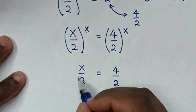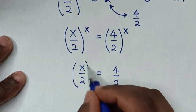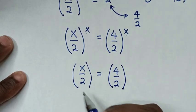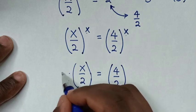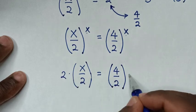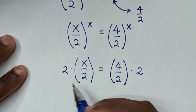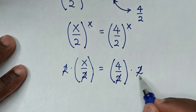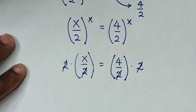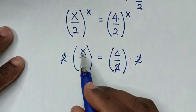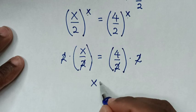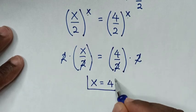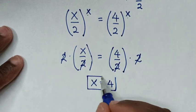Our equation will be x over 2 is equal to 4 over 2. Because we have the same denominator of 2 on both sides, we will multiply by 2 on both sides. This 2 and 2 will cancel, and 2 and 2 will cancel. Then it will be x is equal to 4. Therefore, this is our final answer.